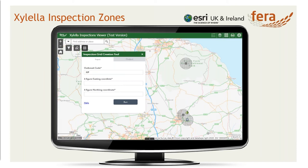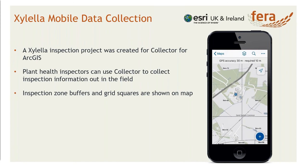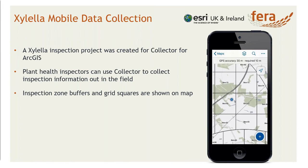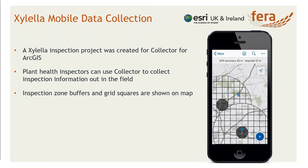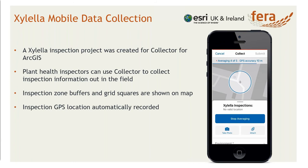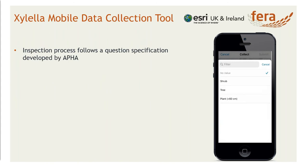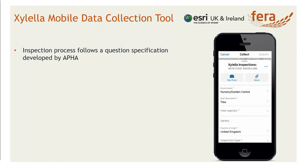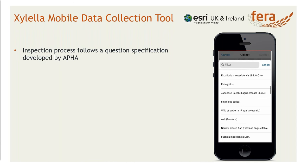We've used Collector for ArcGIS as a way for inspectors to go into the field and conduct their inspections. Those inspection grids are shown in Collector, so once an inspector is allocated to a grid square, they can use Collector to navigate to it and start their inspections. The inspections start by taking a GPS location, and then follow a question specification designed by APHA and the Forestry Commission. A lot of these questions just involve drop-down lists, so the inspection process is quick and keeps data integrity. Some of the longer lists, such as host species, have filters in place so you can filter through the species you're looking for rather than scrolling through reams of different species.